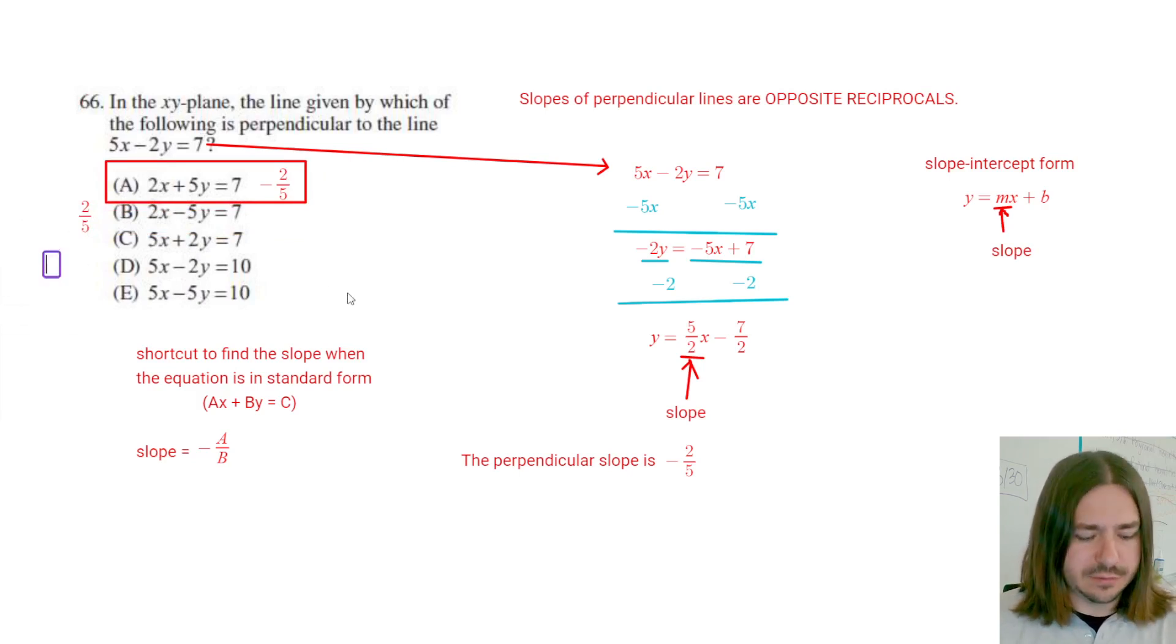For choice C, the slope is negative 5 over 2. It's not what we want. We want the opposite reciprocal slope. So we can see that it's not going to be C. For D, we have 5 over negative 2, which would reduce to positive 5 halves. Again, not what we're looking for. And then finally E would be 5 over negative 5. Negative divided by negative is positive. So 5 over 5 would just be 1. So this last one actually has a slope of 1. So we could see the correct answer here is A.